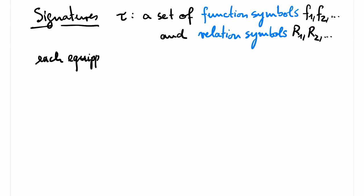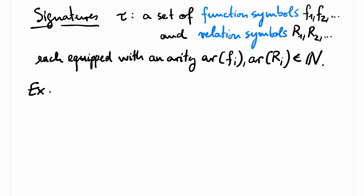Each of the symbols is equipped with an arity, which is a natural number. For example, the signature of graphs consists of a single binary relation symbol, typically this is the letter e for edges.